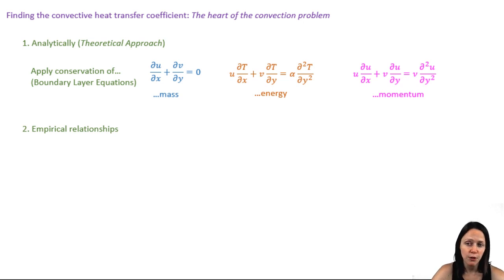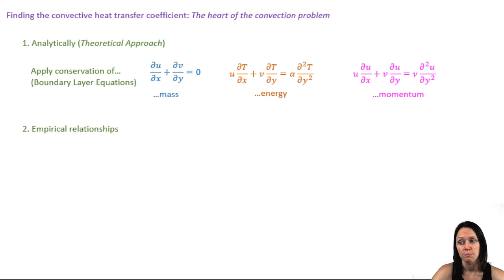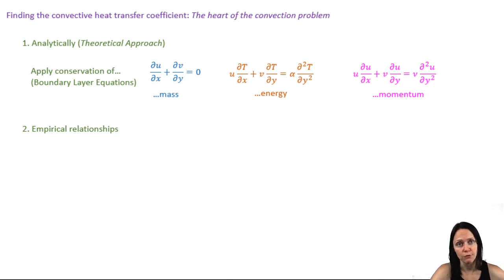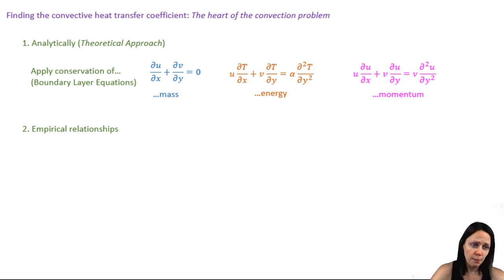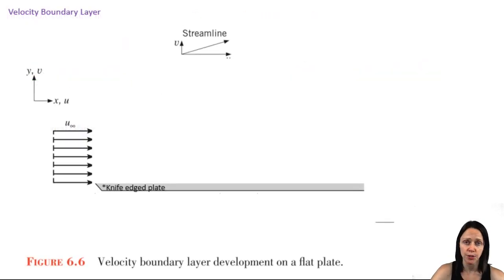For turbulent flow, which we'll discuss shortly, there are no analytical solutions. Those empirical relationships, which have been generalized and scaled up from experimental data, will allow us to solve for H. But before we get to those empirical relationships, let's talk about some of the fundamentals of convection.